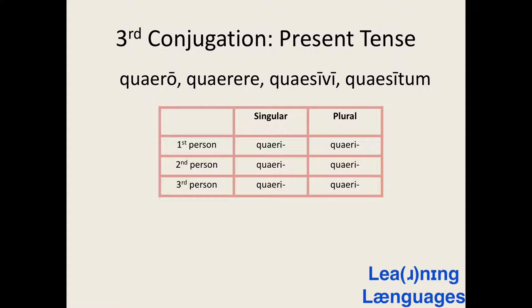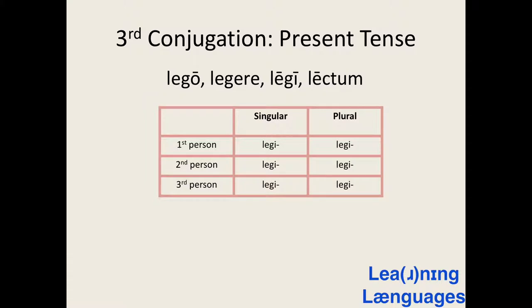Here is the present tense stem for the verb quaero. It is conjugated in the same way as traho. Pause the video and see if you can work out its present tense forms. Here is the present tense conjugation. Pause the video and see if you can conjugate this next verb in the present tense. Here is the present tense conjugation.